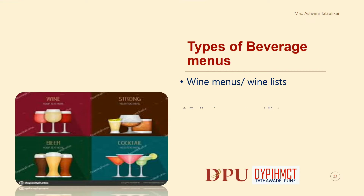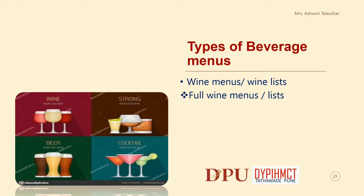Wine menus are further subdivided as full wine menus or list. This kind of menu would be used in an upmarket hotel or restaurant where the customer's average spend would be high and where the time available to consume their meals would likely be in excess of one and a half hours. A full wine list may resemble a small book, often being 15 to 40 pages in length.